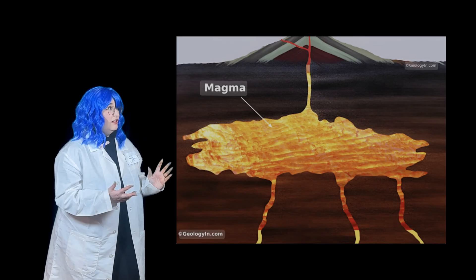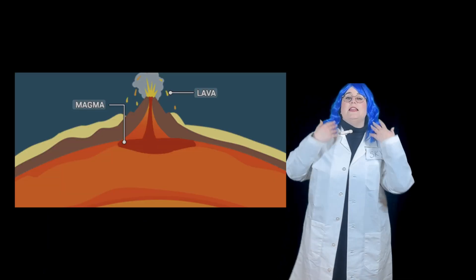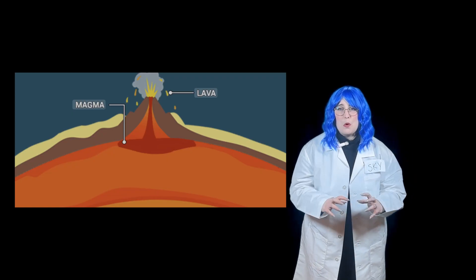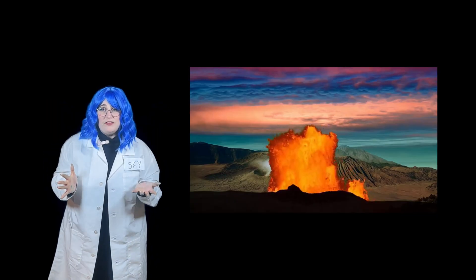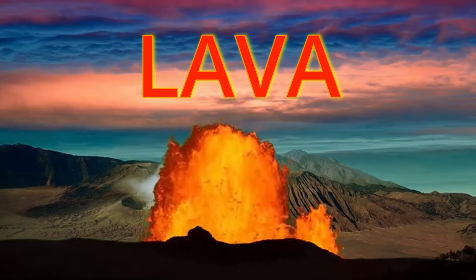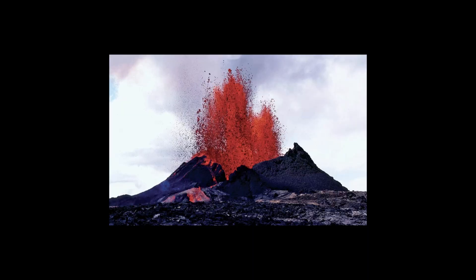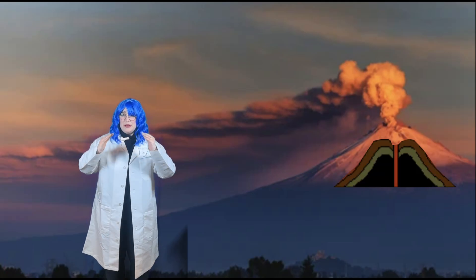But why do volcanoes erupt? Let's find out. Inside the Earth, there's something called magma — really, really hot, melted rock. It stays deep underground in the Earth's core. But sometimes it pushes up through the Earth and then it becomes lava. When the magma reaches the top, it erupts into lava. That's what we just saw in our volcano experiment. Once the lava erupts and cools back down, it turns back into rock. And that's how volcanoes get bigger and bigger and bigger over time.